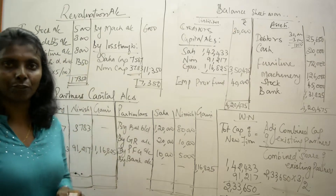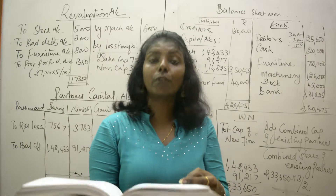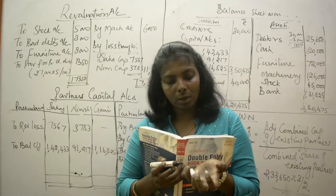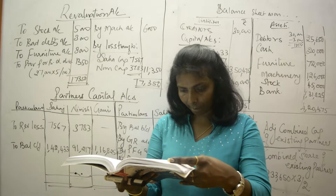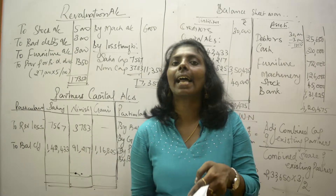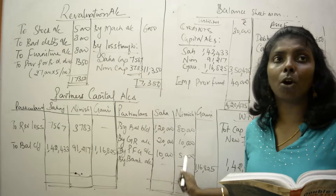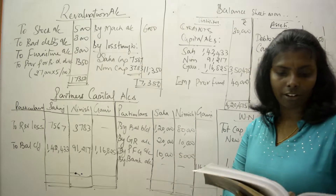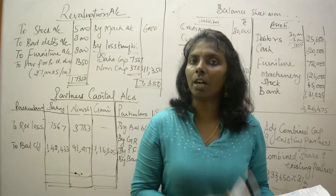With that, the revaluation adjustments are done. Next, goodwill of the firm was valued at 45,000. We calculate the incoming partner's share of goodwill. Gauri is admitted for a one-third share, so one-third of 45,000 is 15,000. That 15,000 goodwill is divided among the old partners in the sacrificing ratio. The old ratio is 2:1, so that's done — premium for goodwill is over.